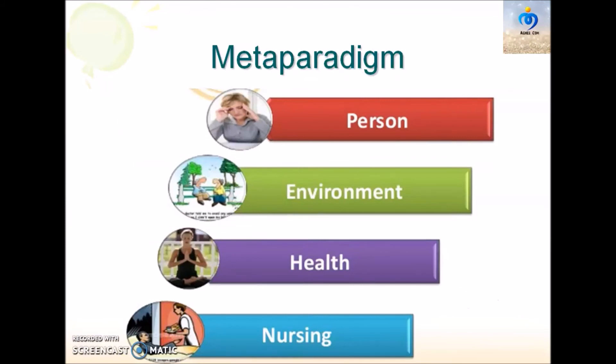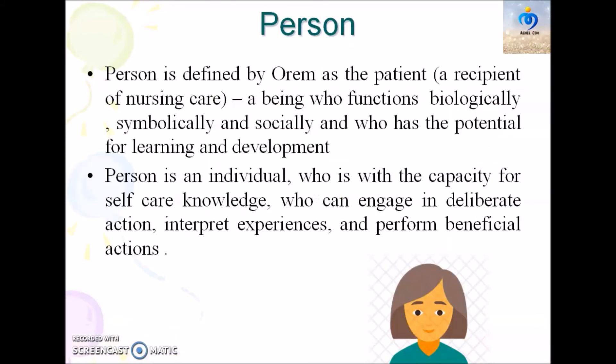Coming to the metaparadigm — in this theory there are four metaparadigm concepts. The first is person. The theorist defines person as a patient or recipient of nursing care who is a being that functions biologically, symbolically, and socially, and who has the potential for learning and development. She also says that a person is an individual with the capacity for self-care knowledge, who can engage in deliberate actions, interpret experiences, and perform beneficial actions.